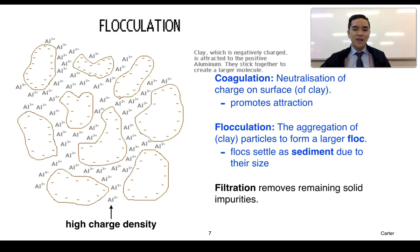After coagulation and flocculation, there is an additional filtration process that typically is used to try and remove any other remaining solid impurities. So typically the water is flowed through layers of sand and charcoal which help to trap these impurities.